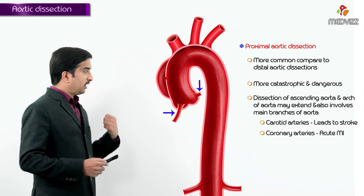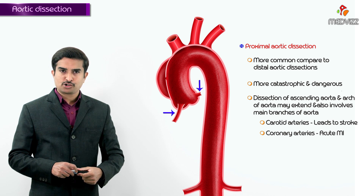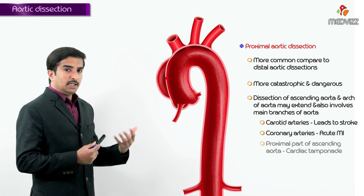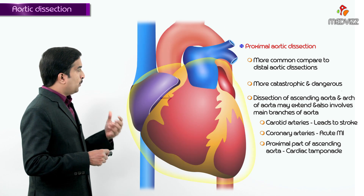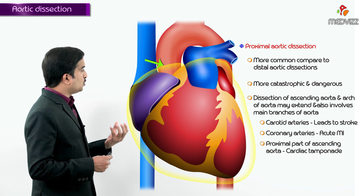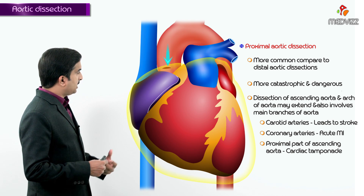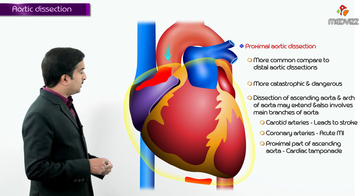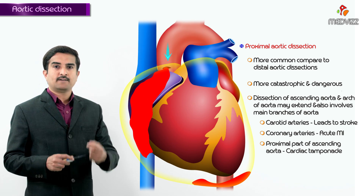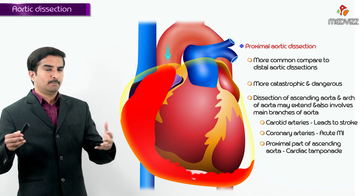By involving the coronary arteries, Type A dissections may also lead to acute myocardial infarction. Furthermore, because the pericardium attaches at the root of the great vessels, a dissection at the proximal aorta can allow blood to escape into the pericardial sac, leading to cardiac tamponade. These are all important complications depending upon the anatomical area and arteries involved in proximal aortic dissection.